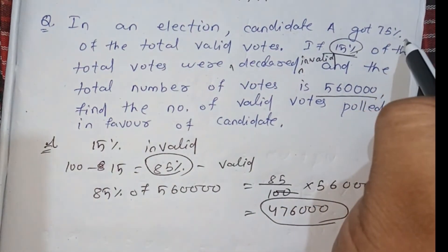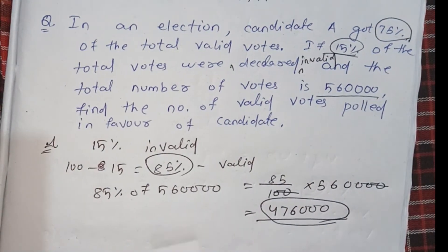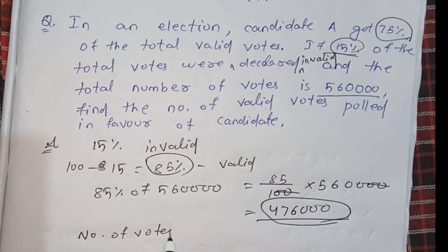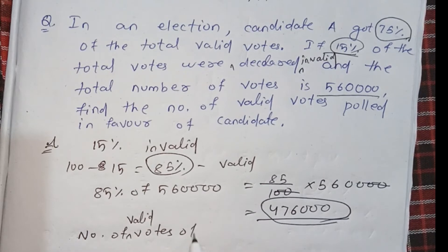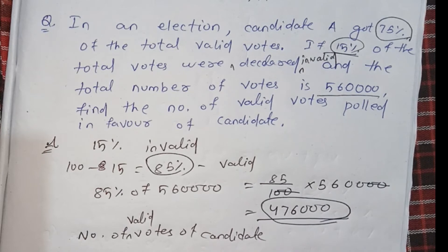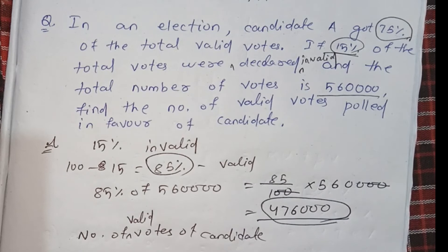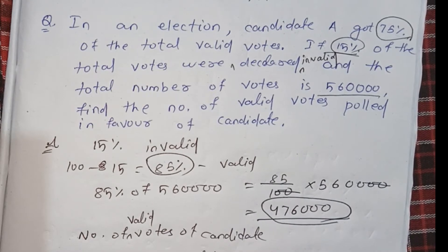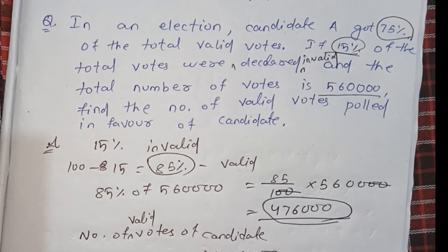The candidate gets 75% of the total valid votes. The total valid votes are 4,76,000. So, the number of valid votes the candidate received equals 75% of 4,76,000, which is 75 divided by 100 multiplied by 4,76,000.